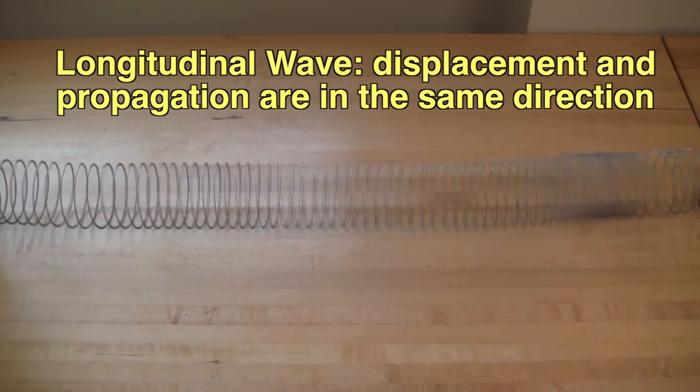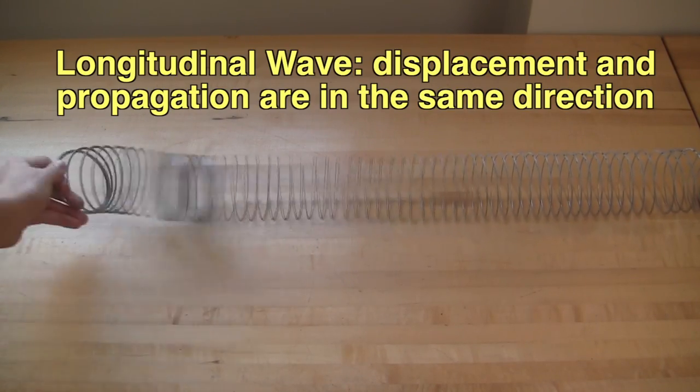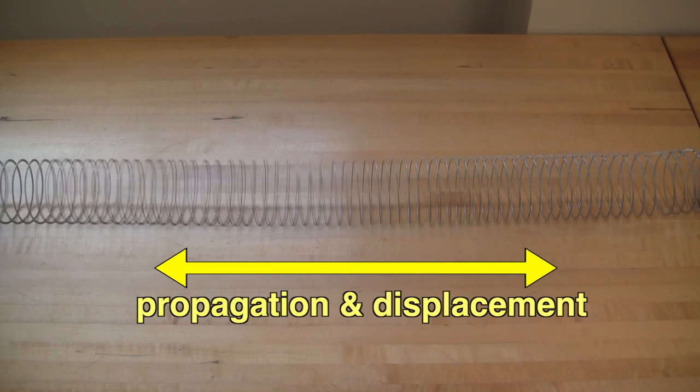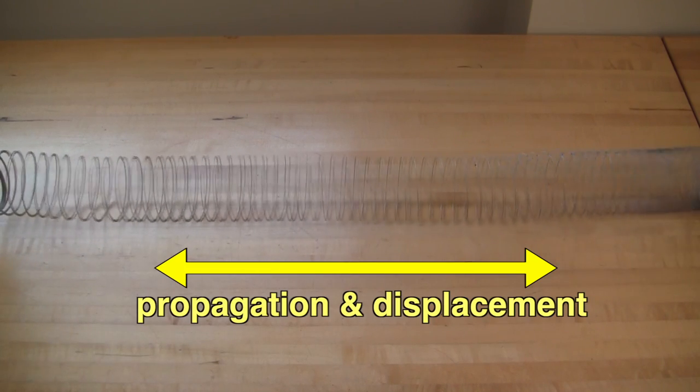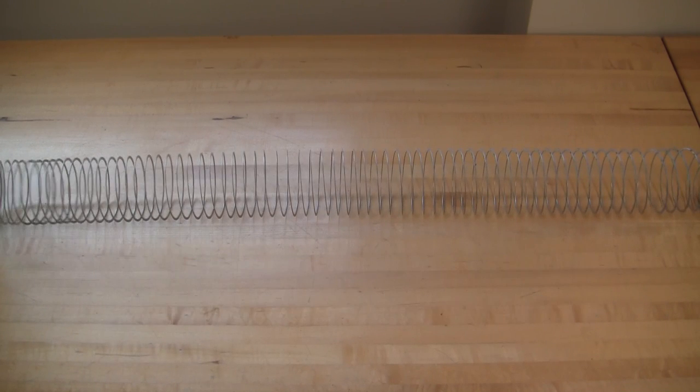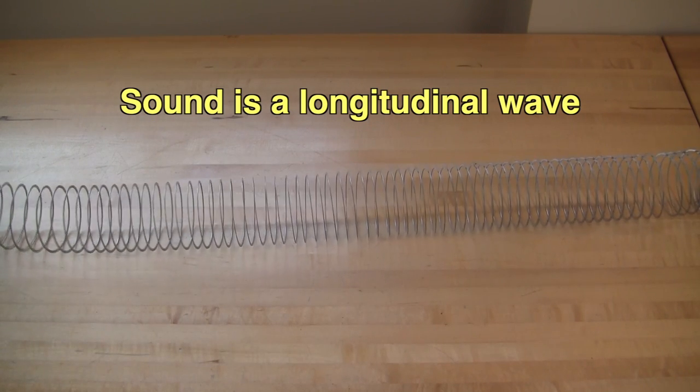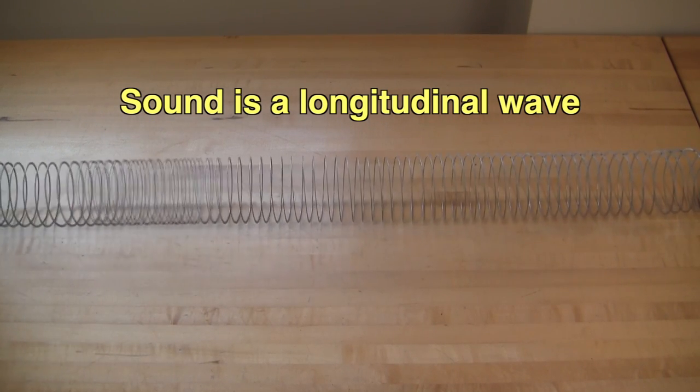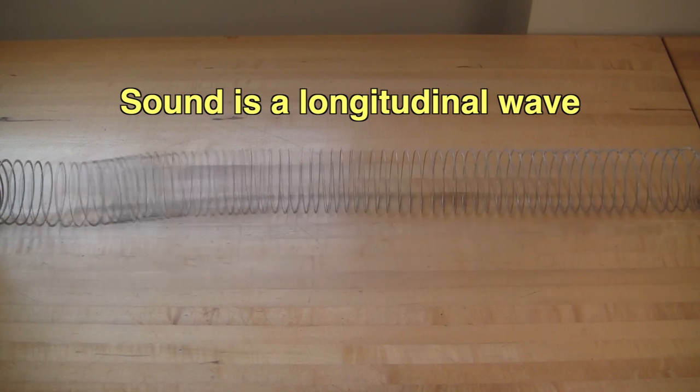For longitudinal waves, the displacement and the propagation are in the same direction. The coils in the slinky move back and forth left to right and the pulse travels along the slinky in the same direction. Sound is a longitudinal wave. As sound waves travel through the air, the air is compressed just like the coils of the slinky.